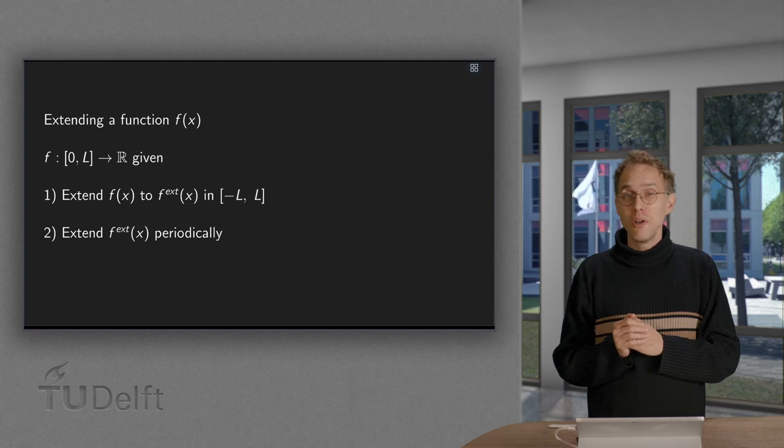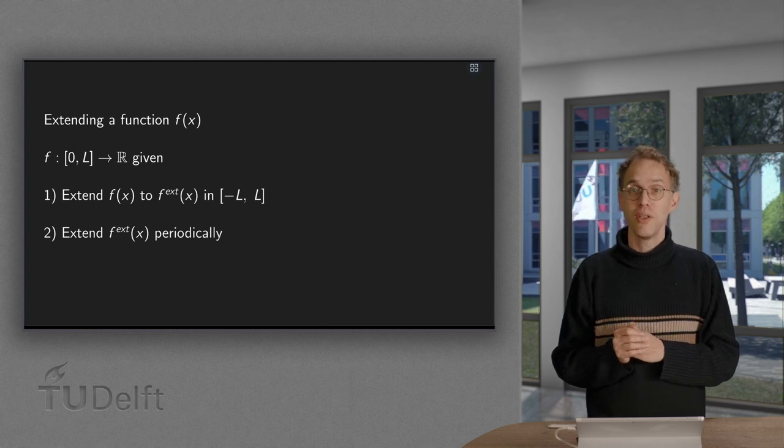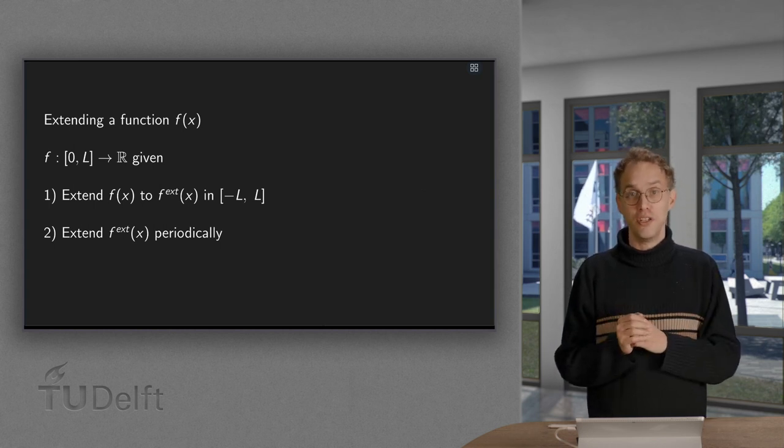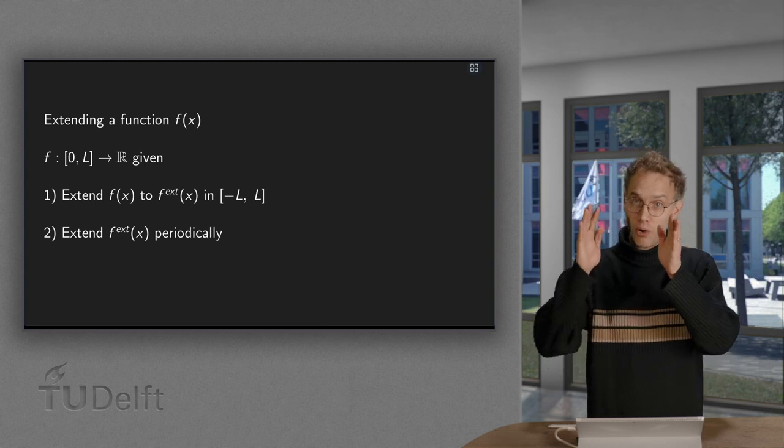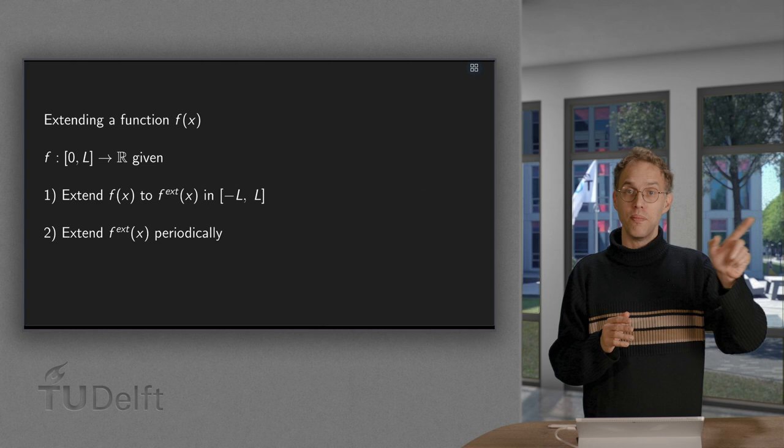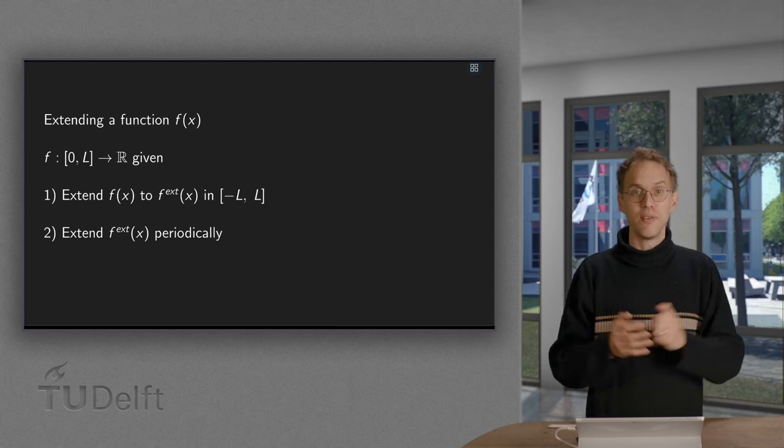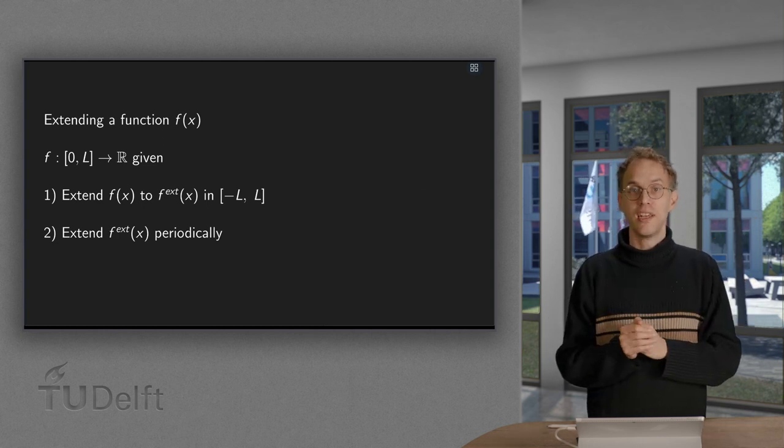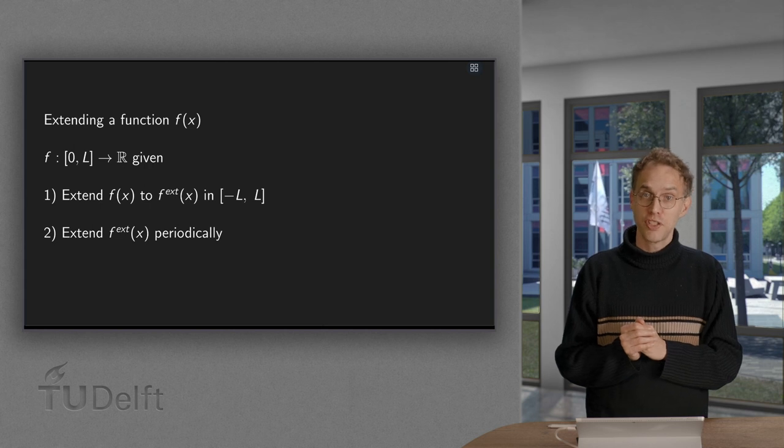So if our function is only specified between 0 and L, we first need to define a new function, which is the original function from 0 to L and something else from minus L to 0, and then we can extend this function periodically and determine the Fourier series of this new function.